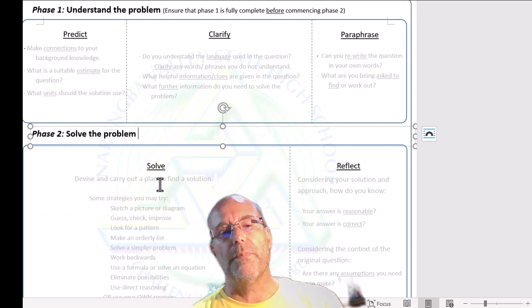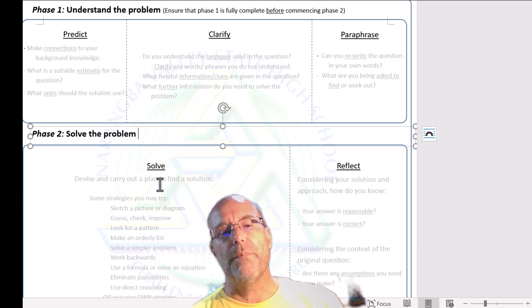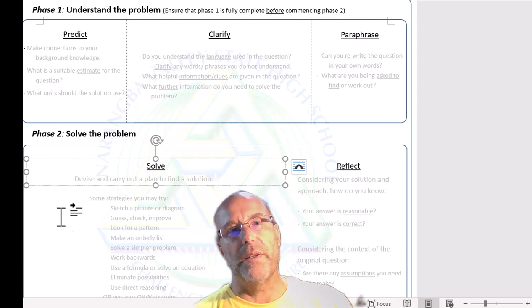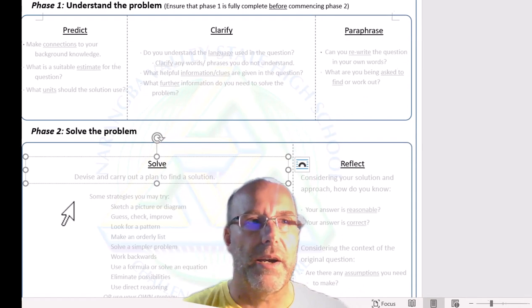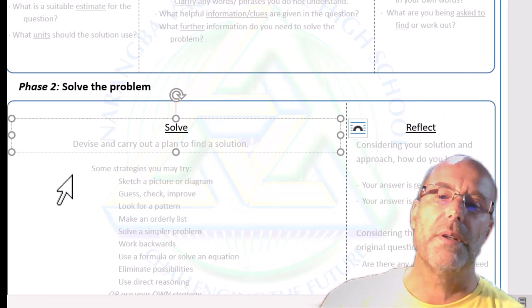So that's understanding the problem. Now solving the problem. Solving the problem is where you get your mathematician's tool shed. You basically devise a plan and you carry it out. You select a strategy and then you carry it out. Now some strategies are going to be as primitive as trial and error.